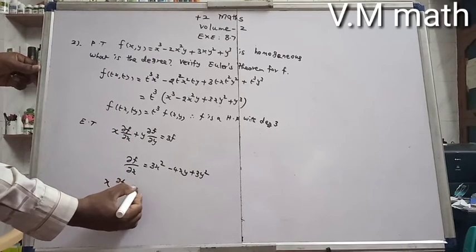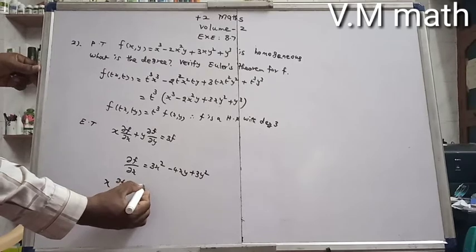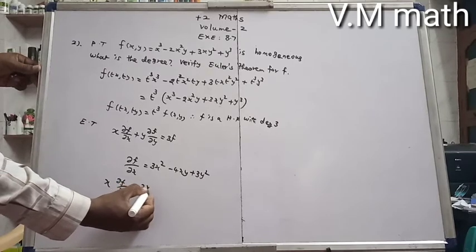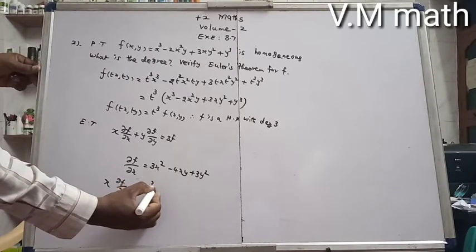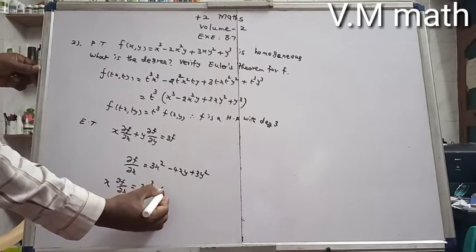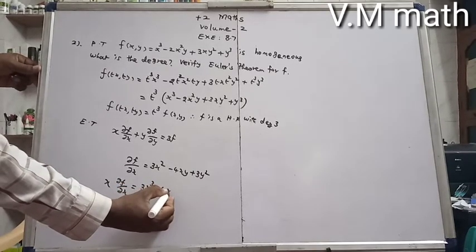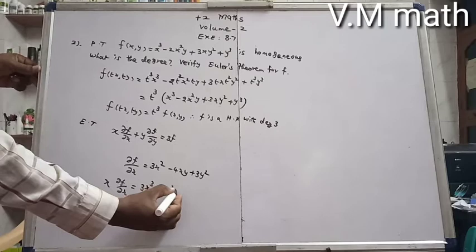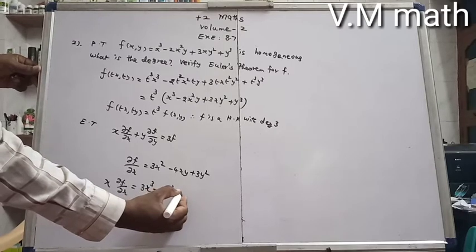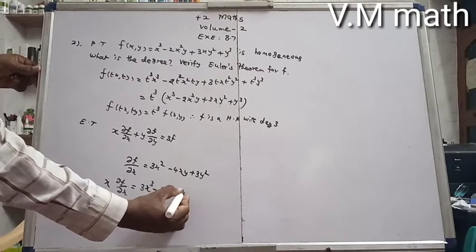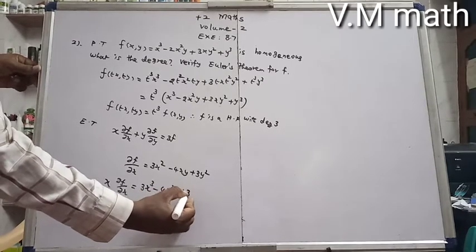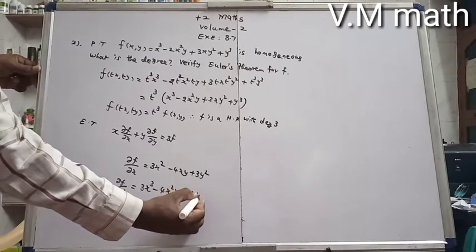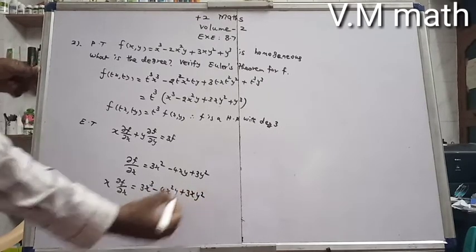Differentiating with respect to x: x · ∂f/∂x = x · (3x² - 4xy + 3y²) = 3x³ - 4x²y + 3xy².